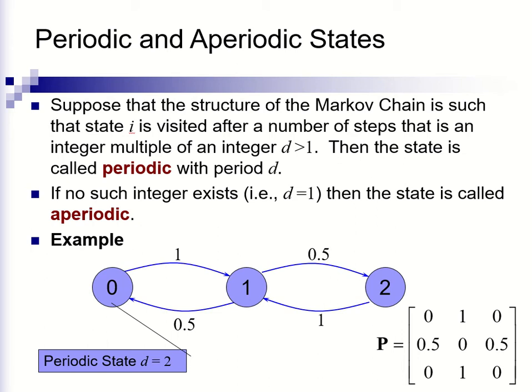If no such integer exists, and that means that d equals 1, then the state is called aperiodic. So first, let's look at what a periodic state looks like.